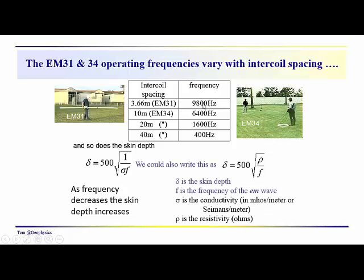Now, notice that the operating frequency for each one of these coil spacings, notice that those frequencies are different, and that for the shorter inter-coil spacing, we have the higher frequency, 9,800 hertz. And then, as we increase the spacing, we decrease the frequency of oscillation in the transmitter coil.